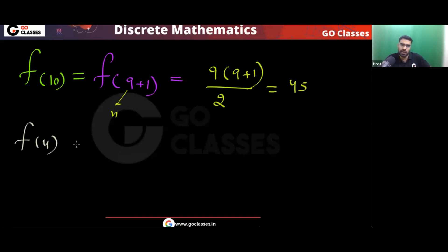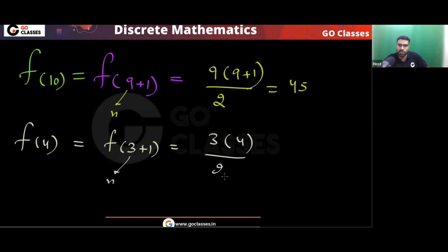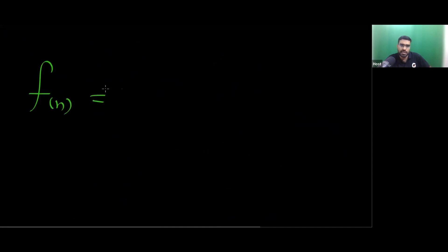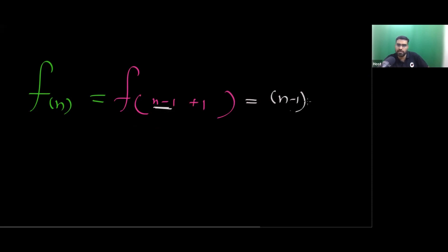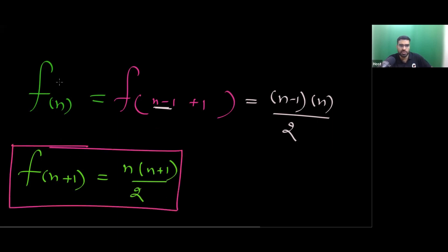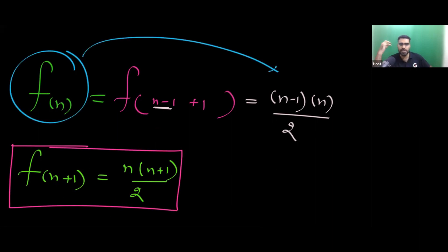You can check: f(4) = f(3+1), so that is 3×4/2 = 6. Correct! For f(10) = f(9+1), that is 9×10/2 = 45. And f(n) itself, since f(n+1) = n(n+1)/2, we get f(n) = (n-1)×n/2. This is the complete analysis of the question.